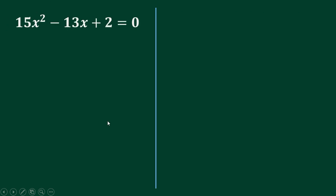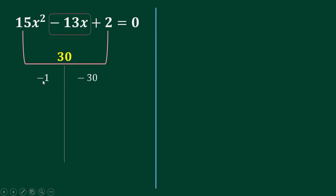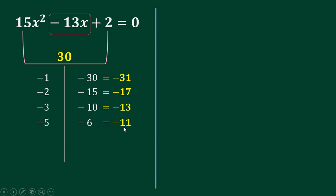For the last example, multiply 15 times 2, that's 30. List all the factors of 30. Since the middle term is negative, the signs are both negative because negative times negative is positive. The factor pairs are: negative 3 times negative 10, negative 5 times negative 6. Adding: negative 13, negative 11. Since the middle term is negative 13, the factor pair is negative 3 and negative 10.